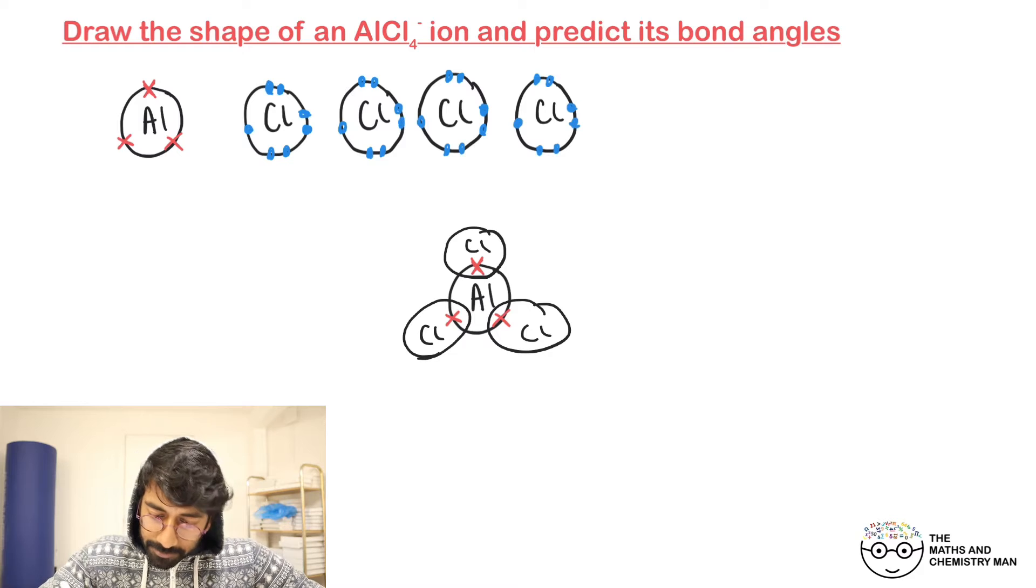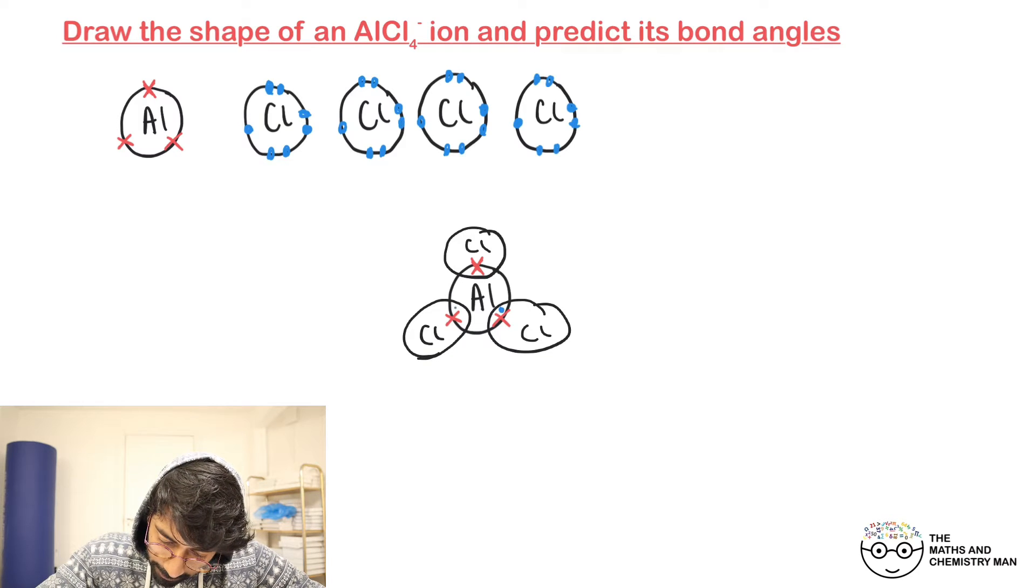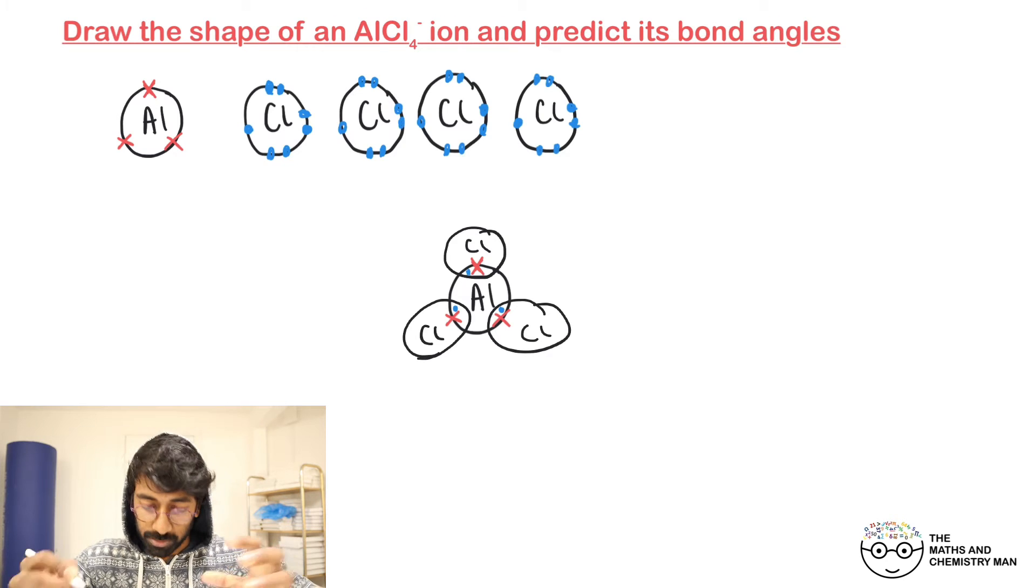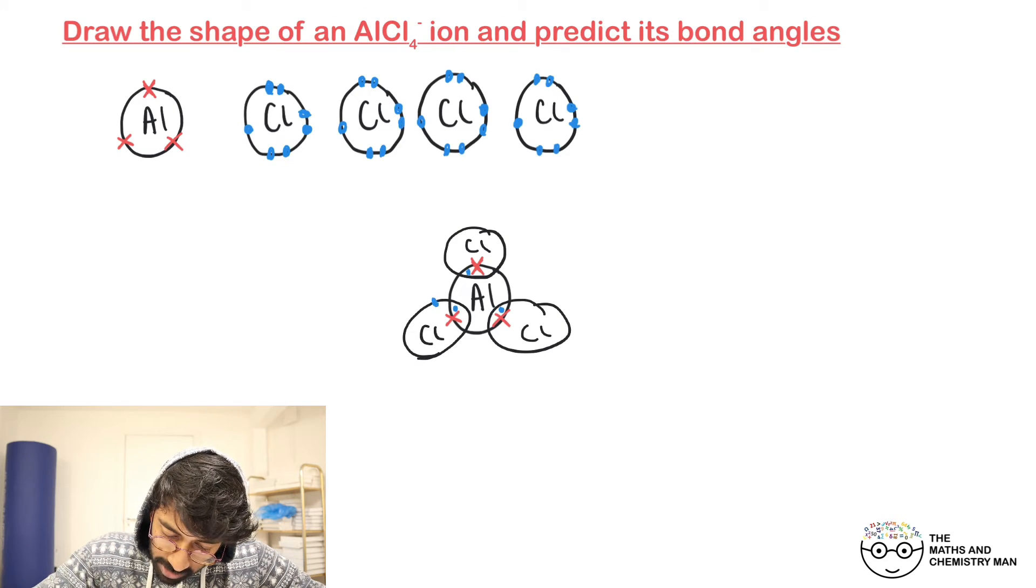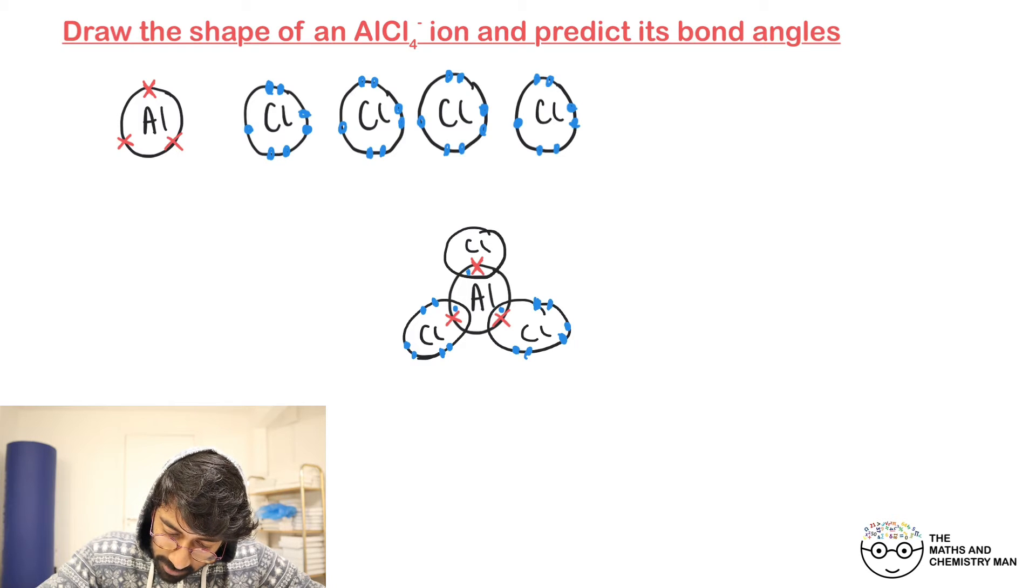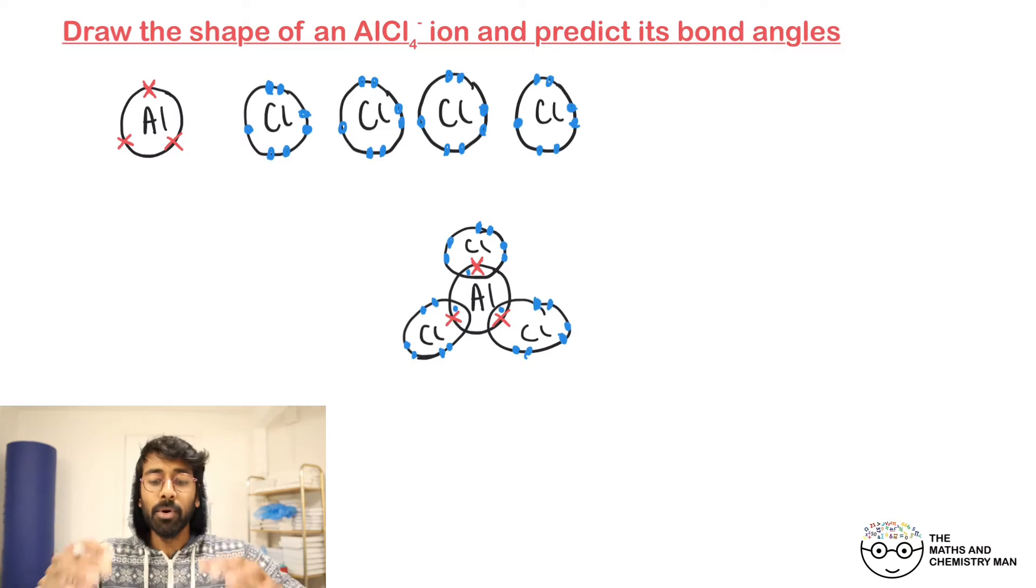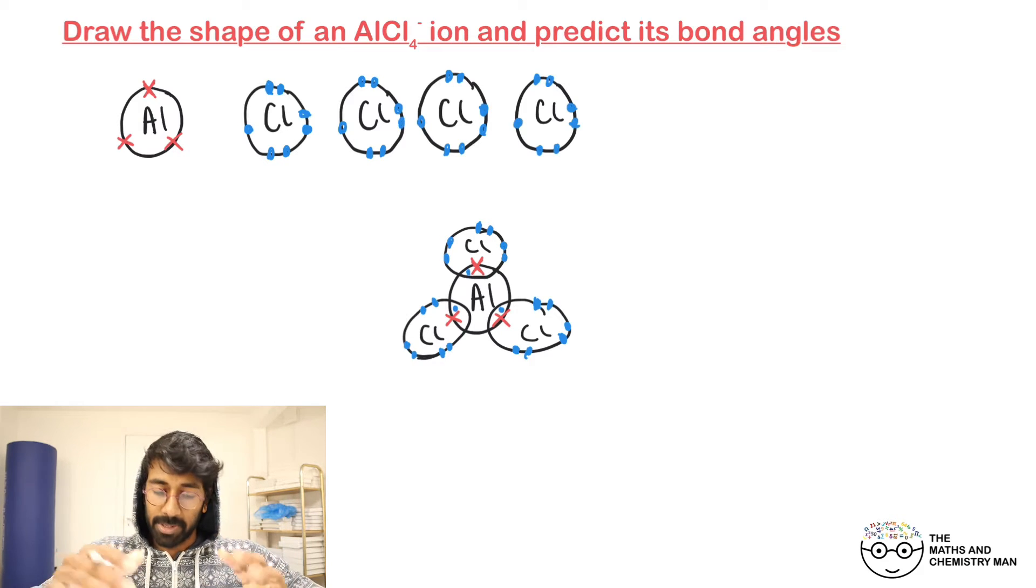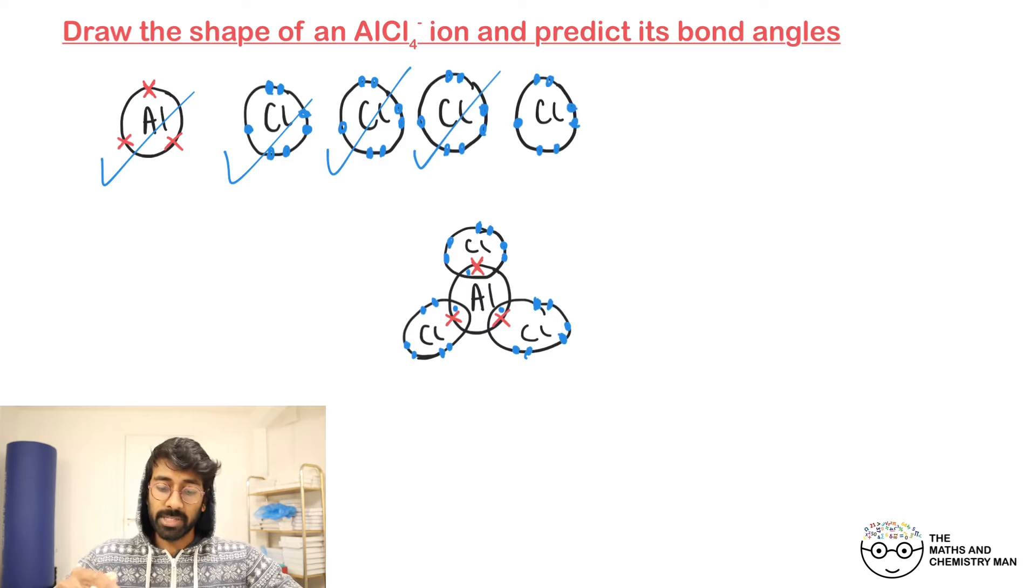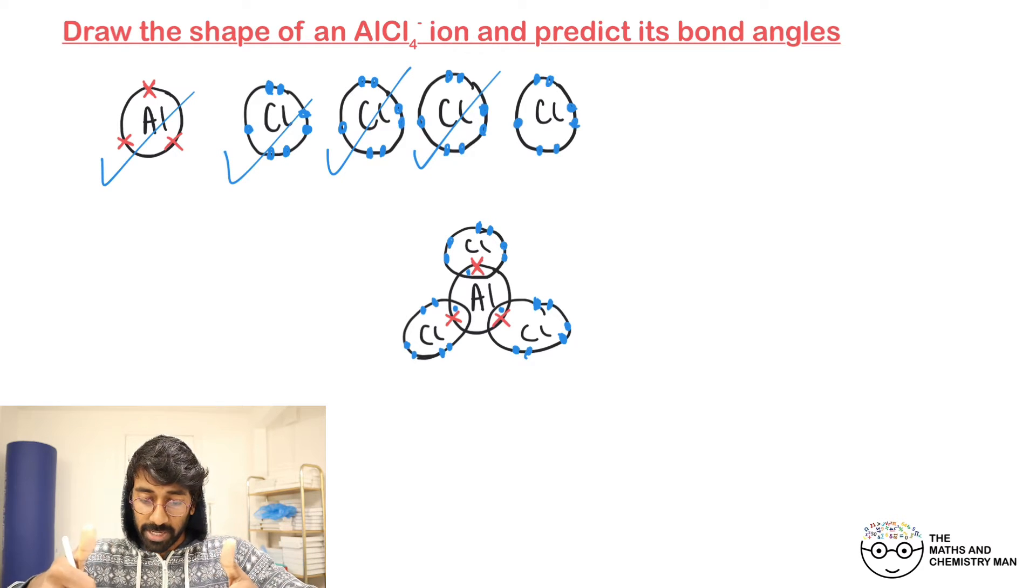They're going to share a pair of electrons, so we've got chlorine electron and an aluminium electron being shared between there. Each of these chlorines needs six more electrons drawn onto them. At the moment this is really happy because we've got this aluminium and it's got three chlorines attached to it. This is AlCl₃.